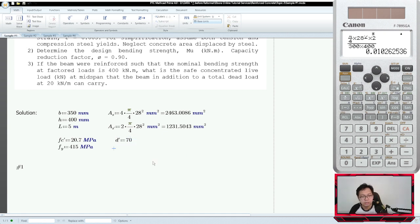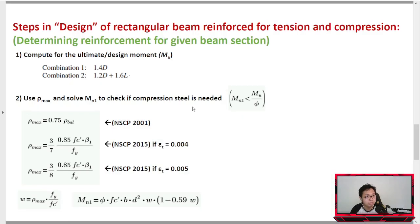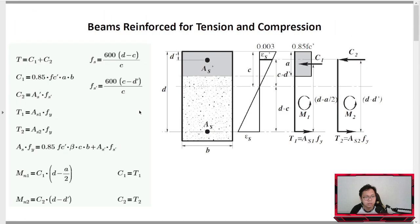Next in our given: Fc prime is 20.7, Fy is 415. Concrete cover to centroid of the reinforcement is 70, so D prime equals 70. The concrete cover is the same for both top and bottom, I'll name both as D prime which is 70mm.